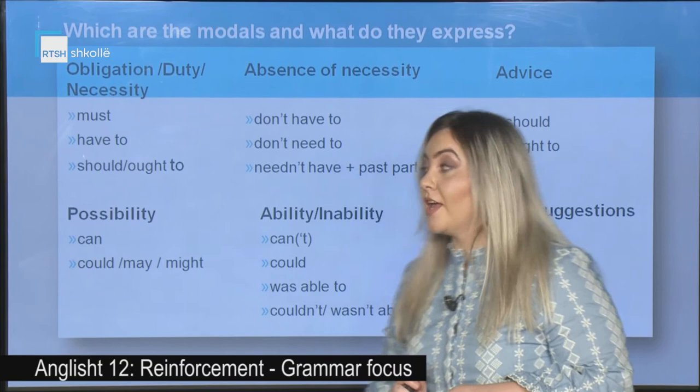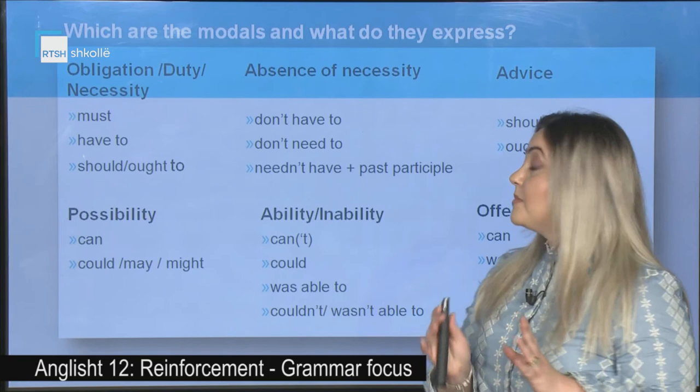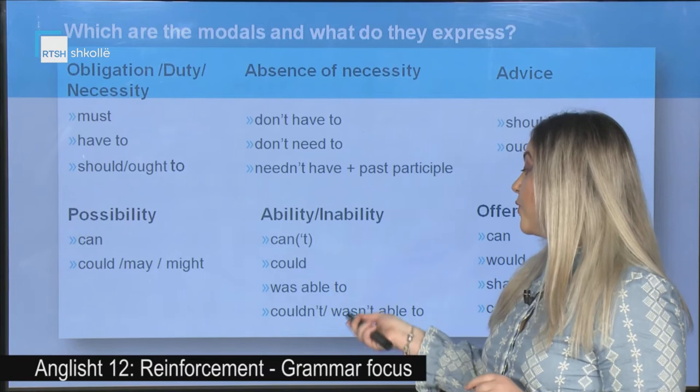We use can, could, may, might for possibility. We use don't have to, don't need to, needn't have plus past participle for absence of necessity. Also, we use can or can't, could, was able to, couldn't, wasn't able to for ability or inability.